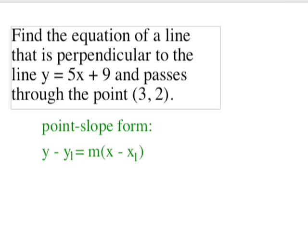In this problem, we're being asked to find the equation of a line that's perpendicular to another line, the line y equals 5x plus 9, and that passes through a particular point, the point (3, 2).